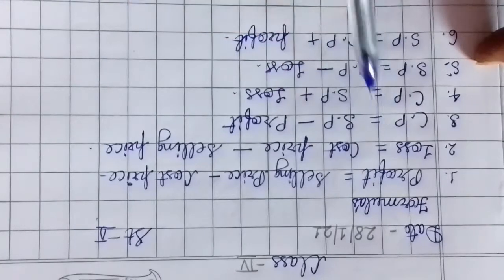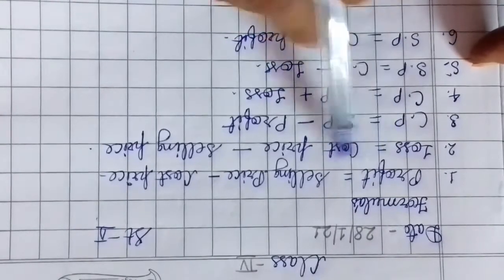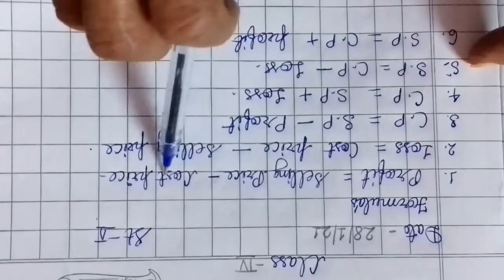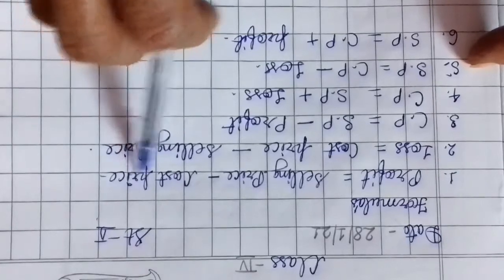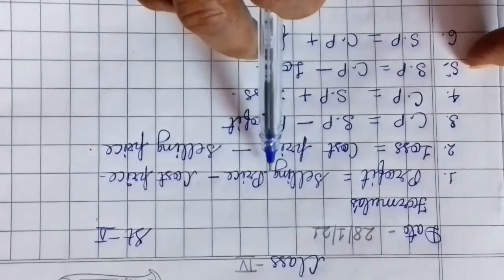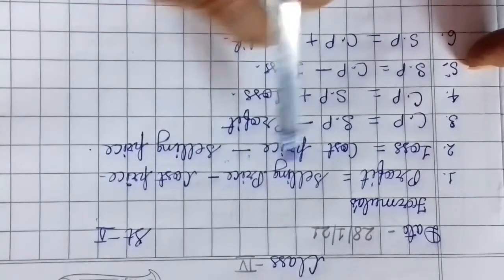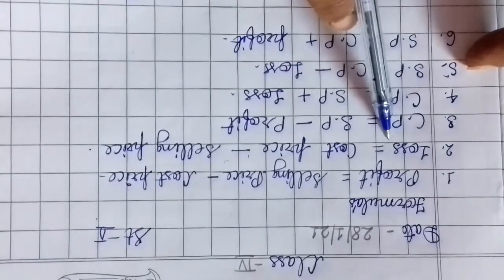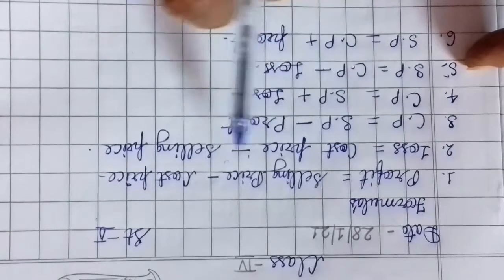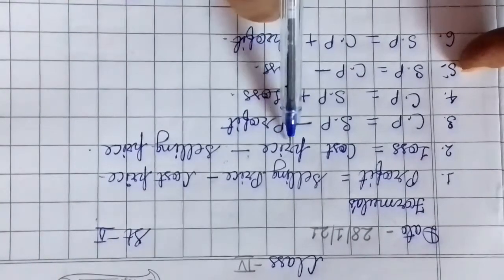Second, formulas. First one: Profit equals Selling Price minus Cost Price. If we do SP minus CP, we get profit. Second formula: Loss equals Cost Price minus Selling Price.